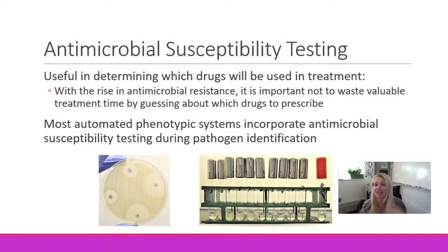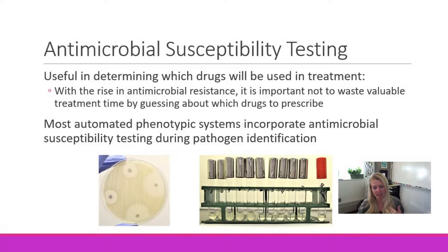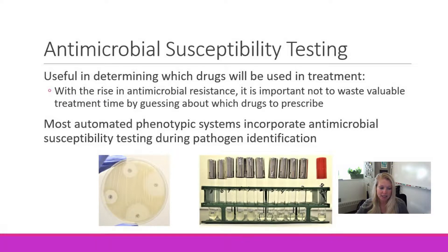MRSA is a very commonly known and seen bacteria — it's a staph aureus that is resistant to methicillin and any of the methicillin derivatives. Multi-drug resistant organisms, or MDRs, are a very big concern. VRE — vancomycin-resistant enterococci — is another. We're seeing a lot of tuberculosis that is multi-drug resistant and it's very concerning. It's important that susceptibility testing is done in order to decrease the chance of treating an organism ineffectively.